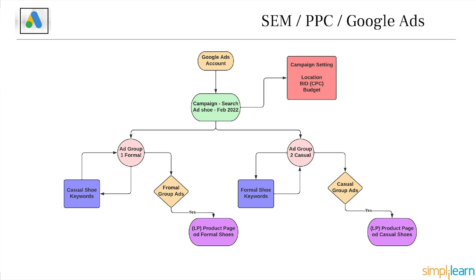Let's convert it to a Google Ads account for a shoe seller — I am Nike and I'm making ads for Nike shoes. I'm selling two types: formal shoes and casual or sports shoes. I created a campaign named 'Search Ad' — for example, November 2022. The name is given for my own reference so that after creating many campaigns I'm not confused about which campaign to check results for.